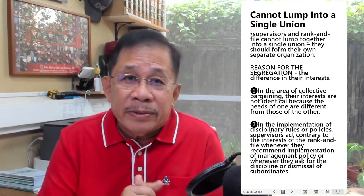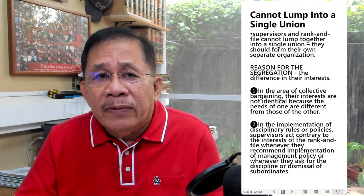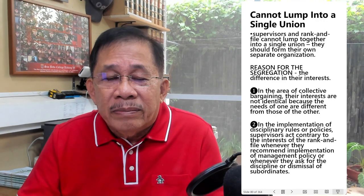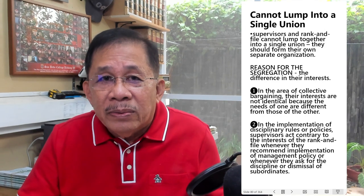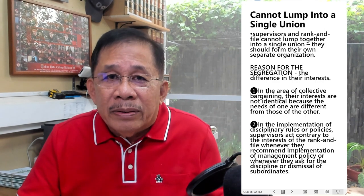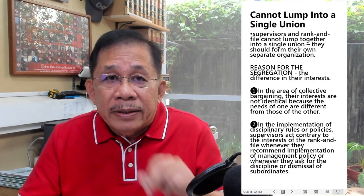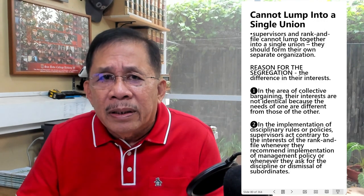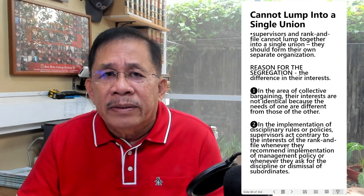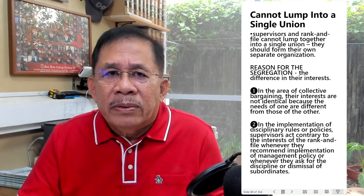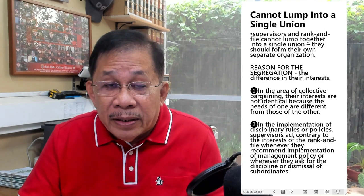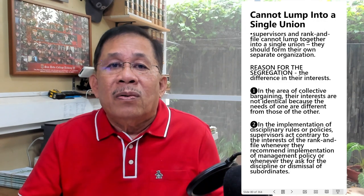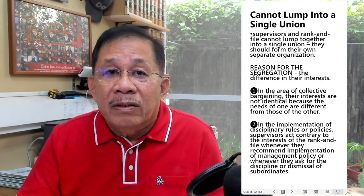Although supervisors and rank-and-file are accorded the right to form or join a labor union, they cannot lump together into a single union — they should form their own separate organizations. The reason for segregation is the difference in their interests; in collective bargaining, their needs are different. In the implementation of disciplinary rules, supervisors act contrary to rank-and-file interests when they recommend management policies or ask for discipline or dismissal of subordinates.